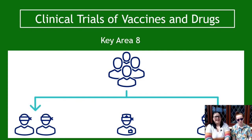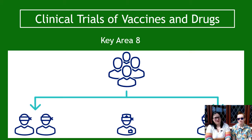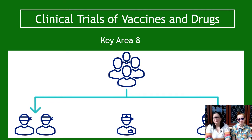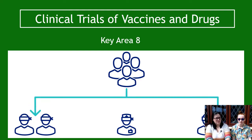We're into key area eight, the final key area of the final unit — immunology and neurobiology. This is a nice short one and we'll summarize the information at the end that you need to know and stuff that you could get tested on.